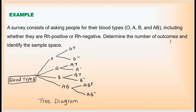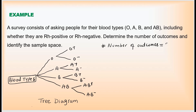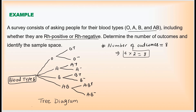We need to determine the number of outcomes. The number of outcomes is always equal to the number of last branches in the tree. Counting: 1, 2, 3, 4, 5, 6, 7, 8. So the number of outcomes equals 8. We get this because we have four blood types times two RH factors — four times two equals eight.